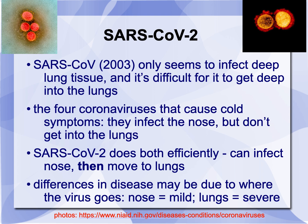SARS-CoV from 2003 seems to only infect deep lung tissue, meaning it has to get past the nose and throat way into the lungs — not easy with all our defense mechanisms. There are four coronaviruses that cause cold symptoms and infect the nose but don't get into the lungs easily. But here's the kicker: SARS-CoV-2 does both efficiently. It can infect the nose and then move to the lungs. If it stays in the nose, you have a mild case and can be an asymptomatic carrier; if it goes down to the lungs, it will be a very severe form.